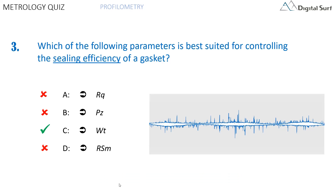The correct answer is C, WT. The most efficient of these parameters for sealing applications is WT, calculated on the waviness profile. Using a waviness parameter has the advantage of removing local roughness and scratches, focusing on form deviation and long wavelengths that may affect contact. RQ is a roughness parameter averaging height differences and cannot be used in sealing applications. PZ is calculated on the primary profile but may be affected by local scratches and peaks that would mask potential form deviations. RSM is a spacing parameter measuring the mean width of profile elements along the x-axis and does not tell anything about the z-axis.